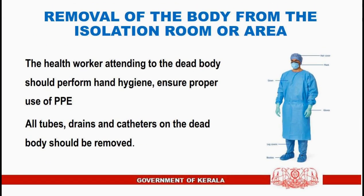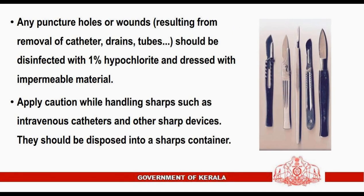Removal of the body from the isolation room or area: the health worker attending to the dead body should perform hand hygiene and ensure proper use of PPE. All tubes, drains, and catheters on the dead body should be removed. Any puncture holes or wounds resulting from removal of catheters, drains, or tubes should be disinfected with one percent hypochlorite and dressed with impermeable material. Caution should be applied while handling sharps such as intravenous catheters; they should be disposed into a sharps container.